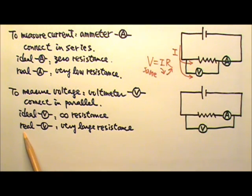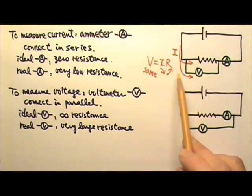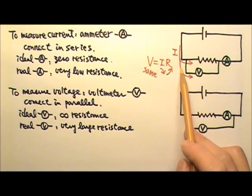But of course, a real voltmeter does not have infinite resistance. A good voltmeter just has very large resistance. So the voltmeter draws very little current from the whole circuit.